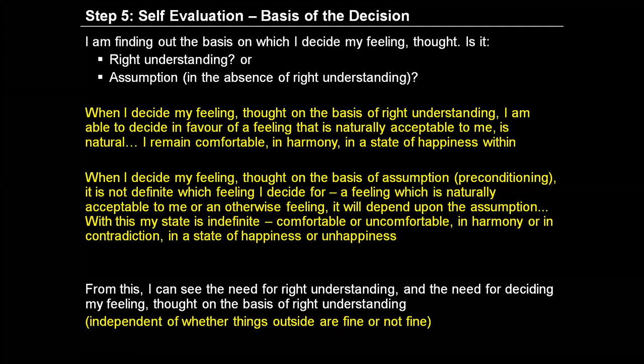My happiness right now — what is the basis for this feeling, this thought that I have at this moment? If I have taken a decision about this feeling, this thought, what is the basis of it? How did I decide it? What was in the background that made me take this decision about my feeling, about my thought? So in Step 5, I am finding out the basis on which I decide my feeling, my thought.